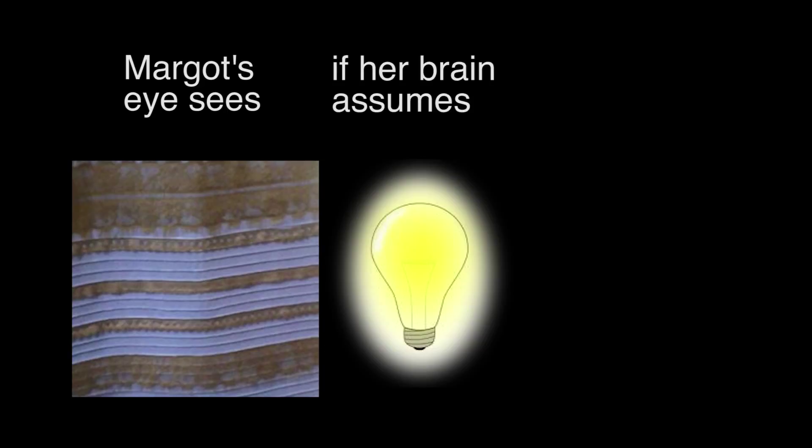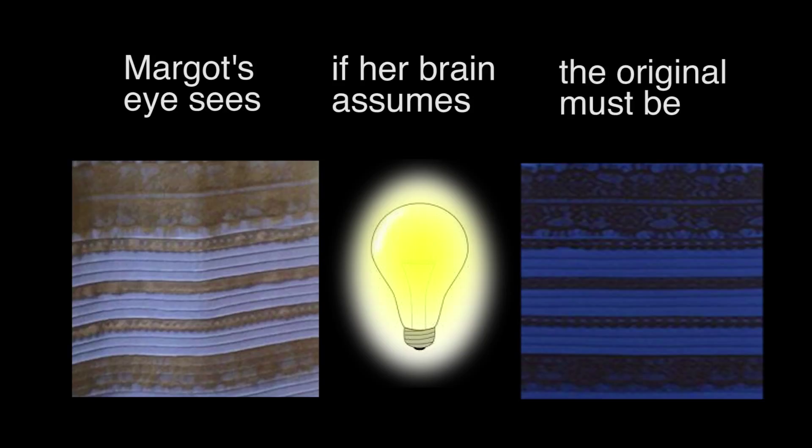Now Margo's eye sees that same image, the same image, but her brain makes the assumption it's a bright yellow light illuminating the dress, so it must have been a much bluer and darker dress in order to end up looking like that.